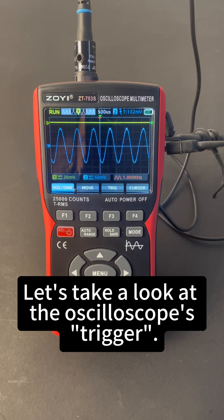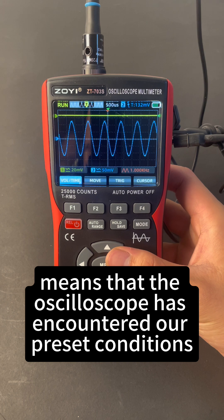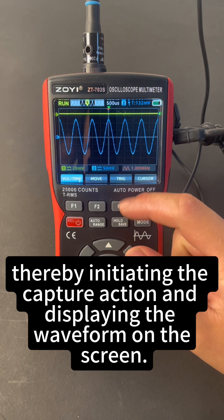Let's take a look at the oscilloscope's trigger. Trigger, literally understood, means that the oscilloscope has encountered our preset conditions, thereby initiating the capture action and displaying the waveform on the screen.